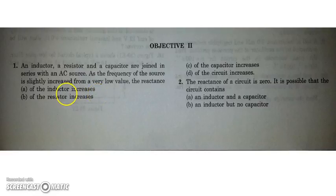As we know that the reactance of inductor is proportional to omega, so if omega is increased, XL will increase. Resistance is independent of omega, so it will not change. And that of capacitor will obviously decrease because it is inversely proportional to omega.